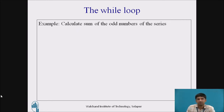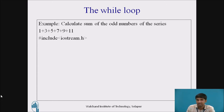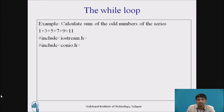Now let us take an example for calculating the sum of the odd numbers of the series — that is 1 + 3 + 5 up to 11. In C++, the program starts with header files: #include <iostream.h> — where iostream stands for input-output stream and .h stands for header file — and the preprocessor directive #include <conio.h>, which is the console input-output header file. It includes two functions: getch and clrscr.